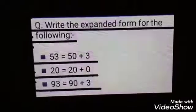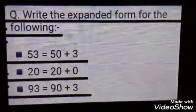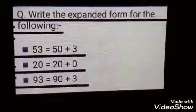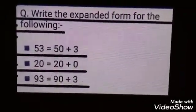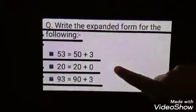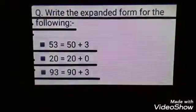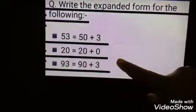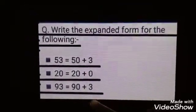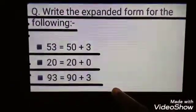53 equals 50 plus 3. Here we wrote 50 plus 3 because 5 is at tens place and 3 is at ones place. 20 equals 20 plus 0 — here it is 2 tens, means 20. We have written 20 plus 0 because 2 is at tens place. Similarly, 93 equals 90 plus 3.